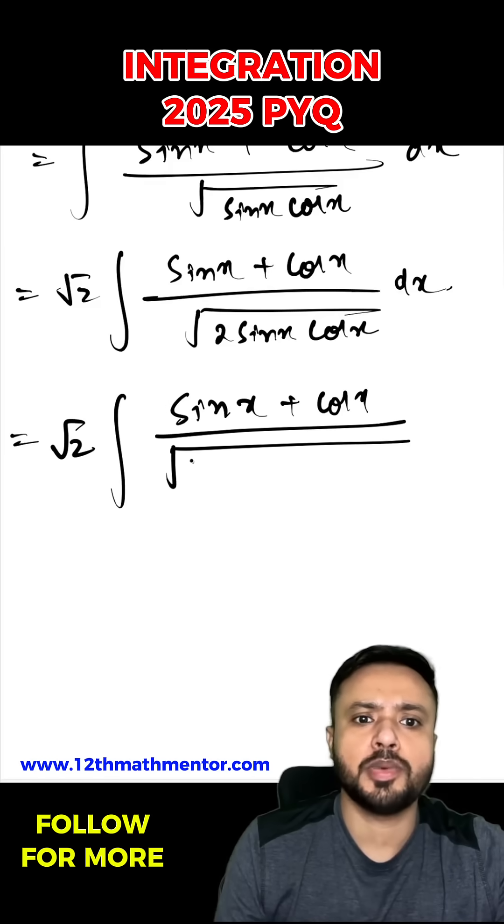Now inside the root I'm going to add and subtract 1, so I can write as 1 minus 1 plus 2 sine x cos x dx.